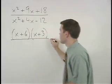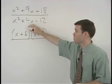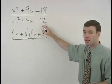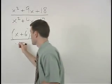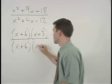In the denominator, we're looking for factors of negative 12 that add to positive 4, which are positive 6 and negative 2. So we have x plus 6 times x minus 2.